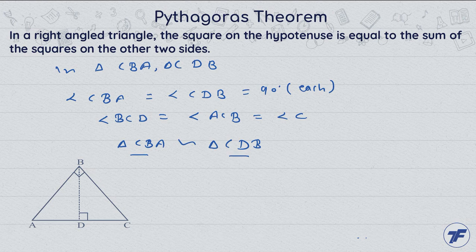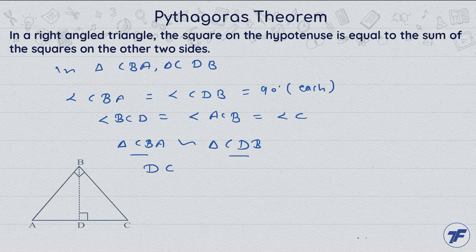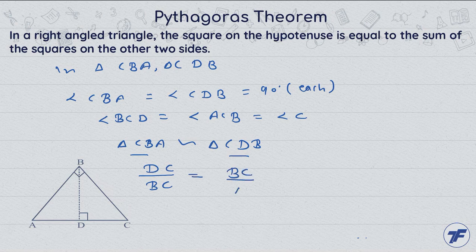It means DC upon BC equal to BC upon AC.